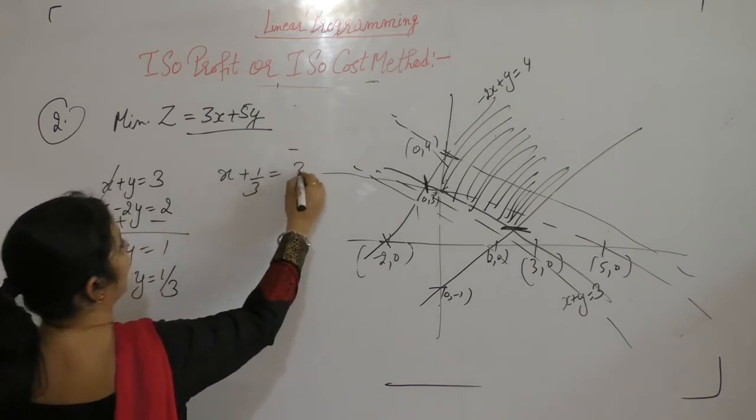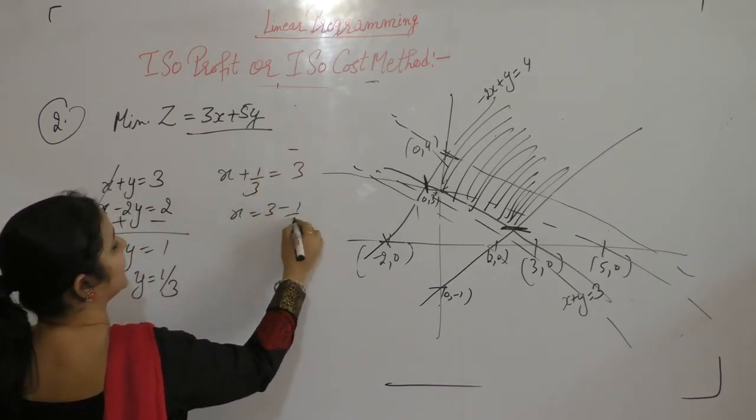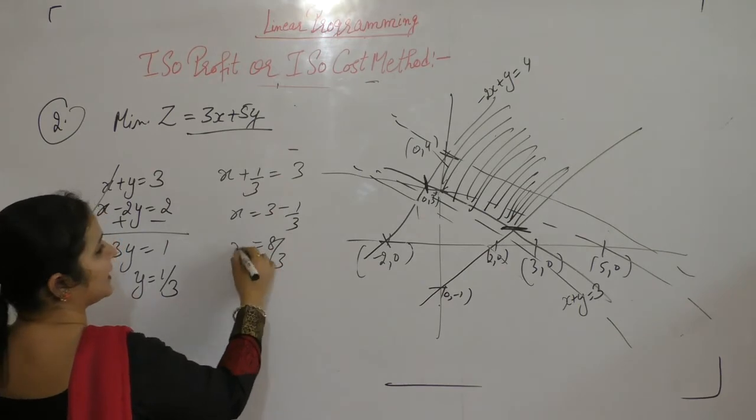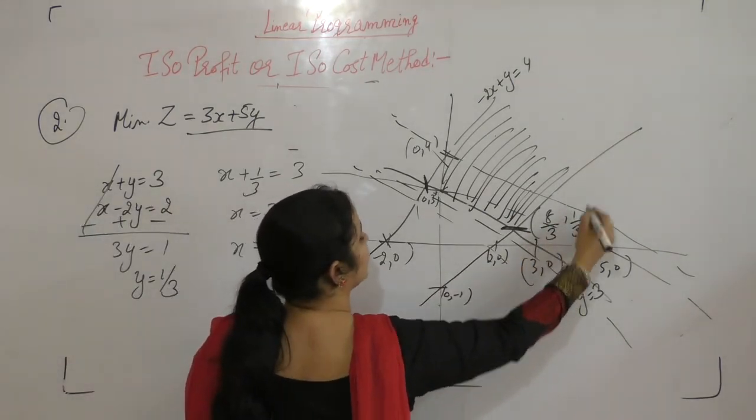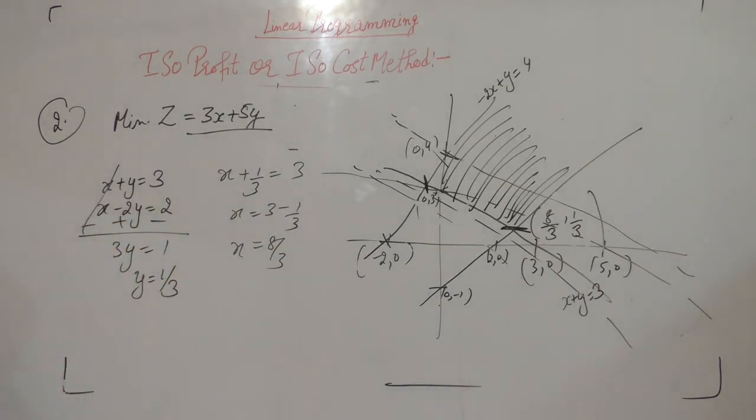Put the value of y. x equals 3 minus 1 by 3, which is 9 minus 1, that's 8 by 3. So x is 8 by 3 and y is 1 by 3.